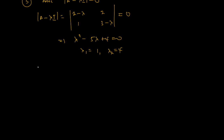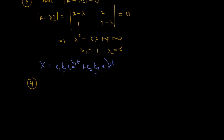Since the two eigenvalues are distinct, the general solution of the system should be of this format: x = C1·K1·e^(λ₁t) + C2·K2·e^(λ₂t), where λ₁ is the first eigenvalue and K1 is the corresponding eigenvector, and λ₂ is the second eigenvalue and K2 is the corresponding eigenvector. I've already found the eigenvalues, so now I want to find the eigenvectors.